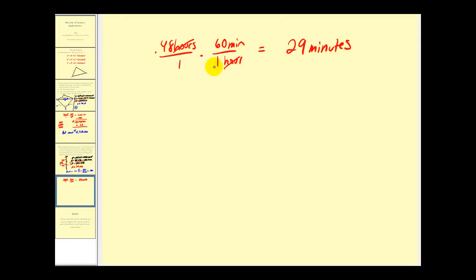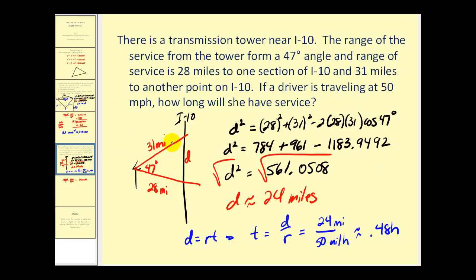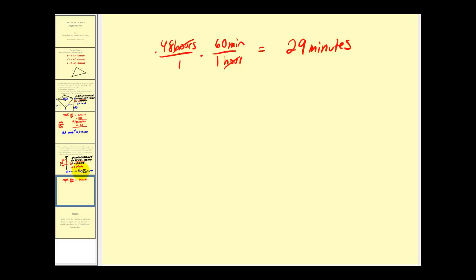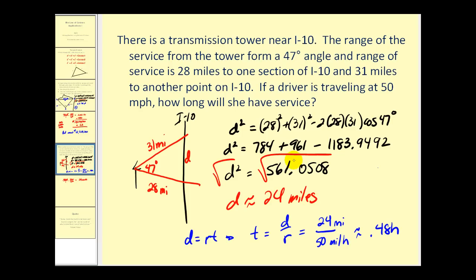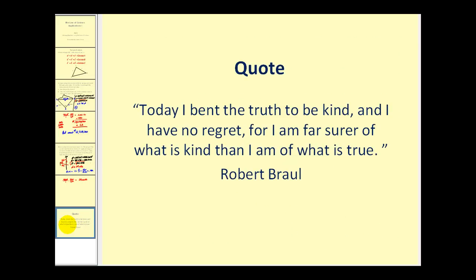Now the reason I'm always rounding to, and notice how I'm rounding to two significant digits. And the reason I am is because notice that all of the given information has two significant digits, so I'm maintaining that consistency throughout this problem. Sometimes textbooks ask you to round to a specific place value. Okay, I hope you found this video helpful. Thank you and have a good day.